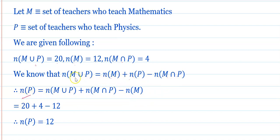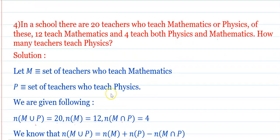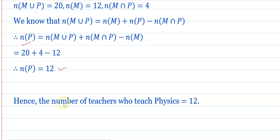Therefore n(P) = n(M union P) + n(M intersection P) minus n(M) = 20 + 4 minus 12 = 12. Hence the number of teachers who teach physics is 12.